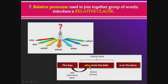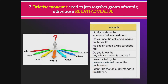Relative pronouns are used to join groups of words or introduce a relative clause — a clause that gives more information about the subject of the sentence. The relative pronouns are: who, that, which, whose, when, where, and whom. For example: 'The boy who stole the bike is at the door.' Without 'who stole the bike,' you'd just have 'the boy is at the door' — the relative clause specifies which boy.